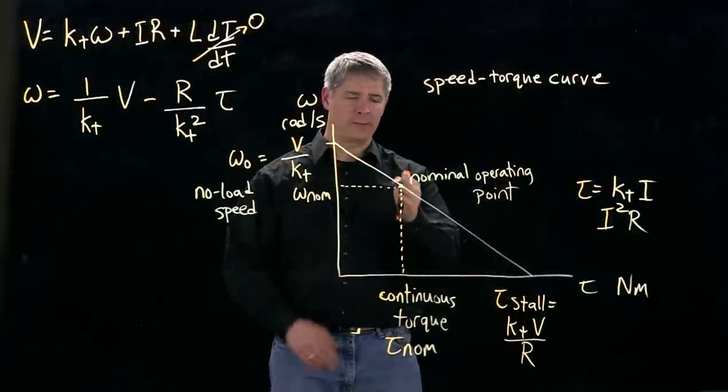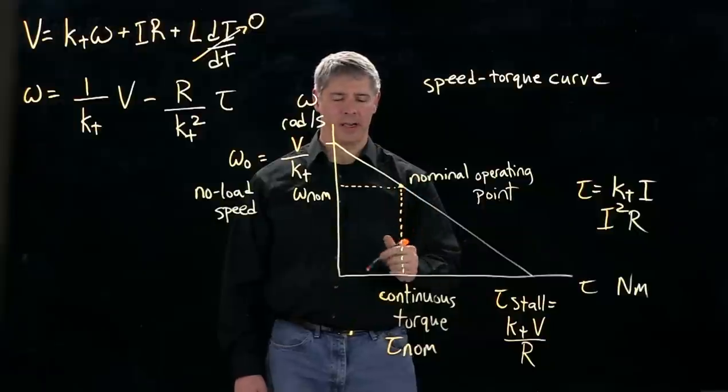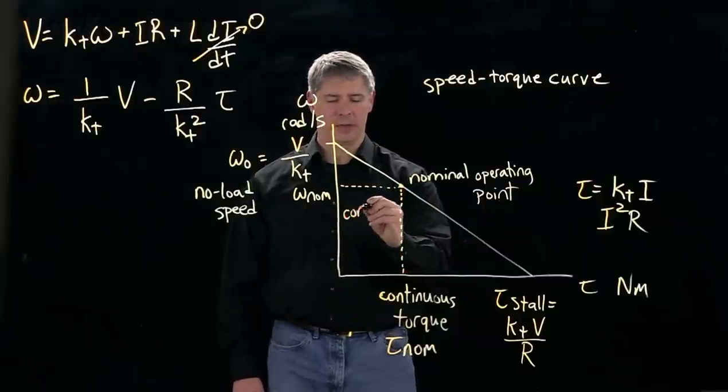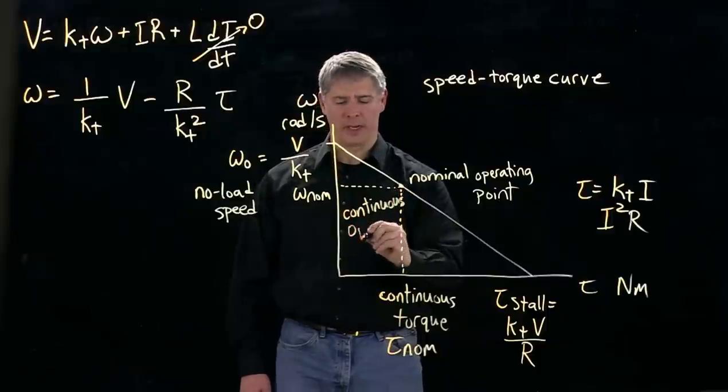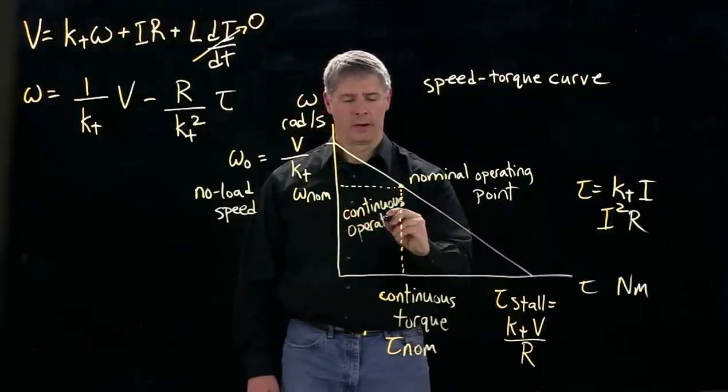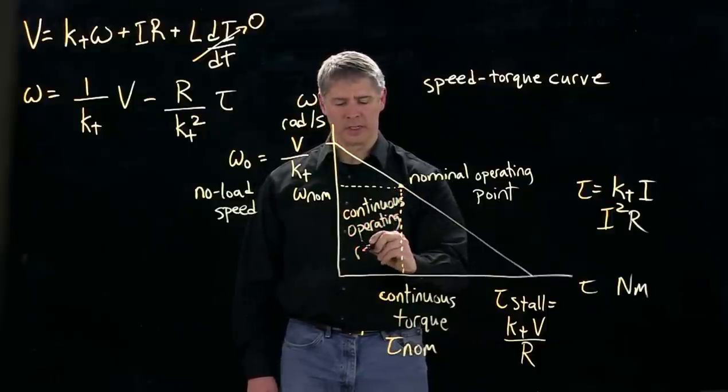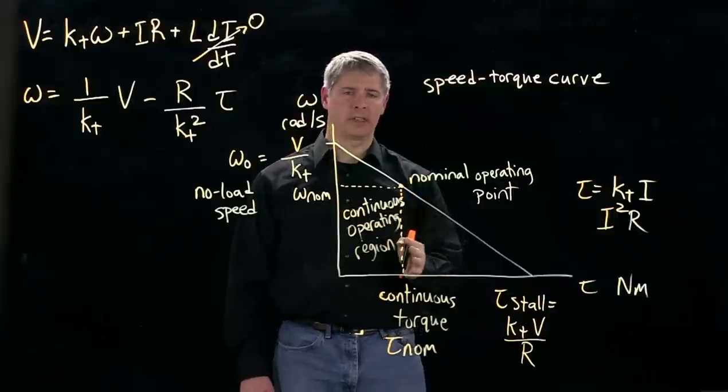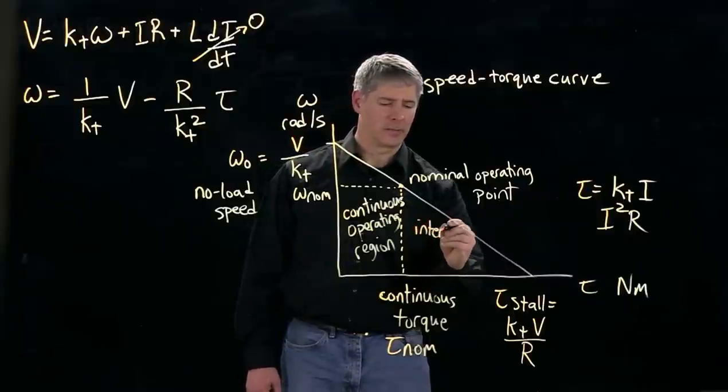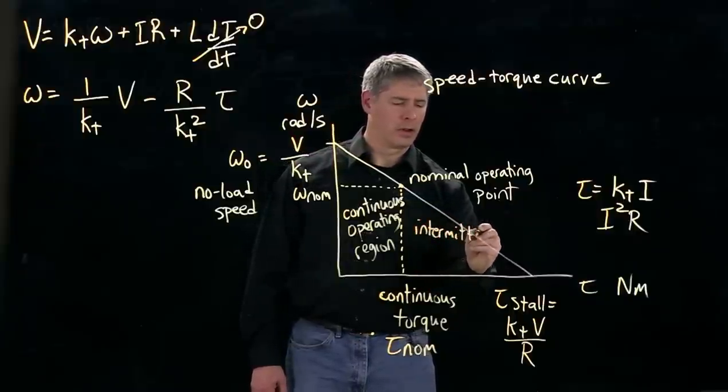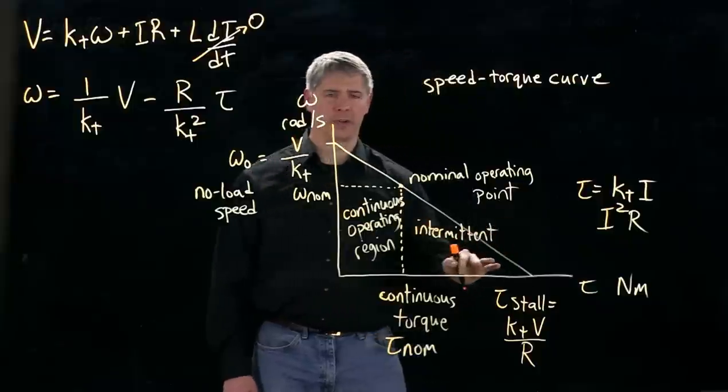And everywhere to the left of this vertical line is called the continuous operating region. And everything to the right of this line is called the intermittent operating region.